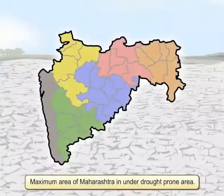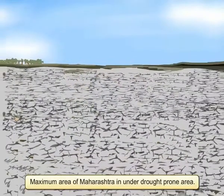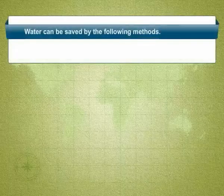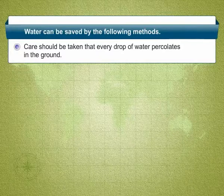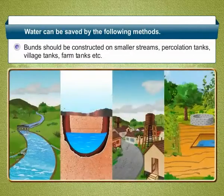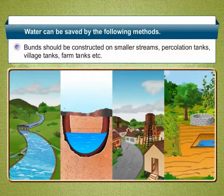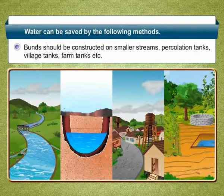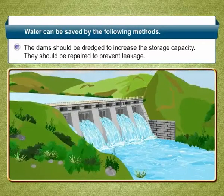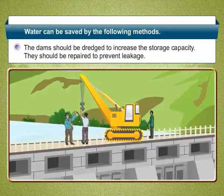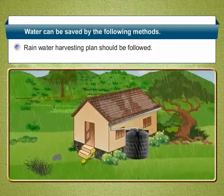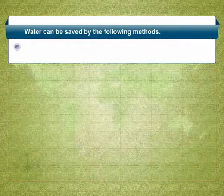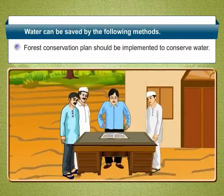Rain water is the main source of water in Maharashtra and maximum area is drought-prone, so it is necessary to conserve water. Water can be saved by the following methods: (1) Care should be taken that every drop of water percolates into the ground. (2) Bunds should be constructed on smaller streams, along with percolation tanks, village tanks, and farm tanks. (3) Dams should be dredged to increase storage capacity and repaired to prevent leakage. (4) Social awareness must be created to save water. (5) Rain water harvesting plans should be followed. (6) Forest conservation plans should be implemented to conserve water.